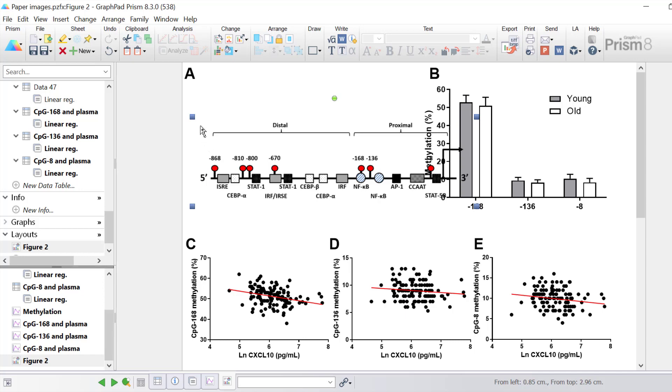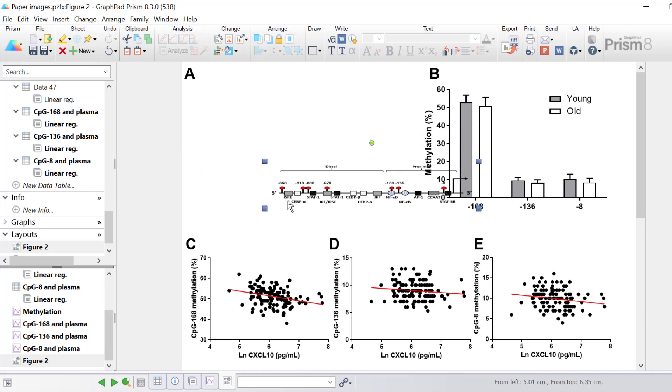However if you hold the shift button down whilst clicking and dragging on one of the blue squares you can change the height and the width independently. Notice that the ratios will then change so you could easily distort the image.